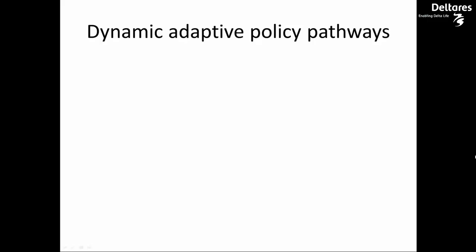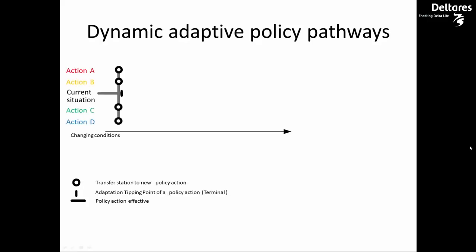This is a short presentation to give an impression of the Dynamic Adaptive Policy Pathway Method, or DAP. The adaptive pathways approach is modeled on the idea of a metro map. Its essence are sequences of measures over time, or pathways, that reach specified objectives.